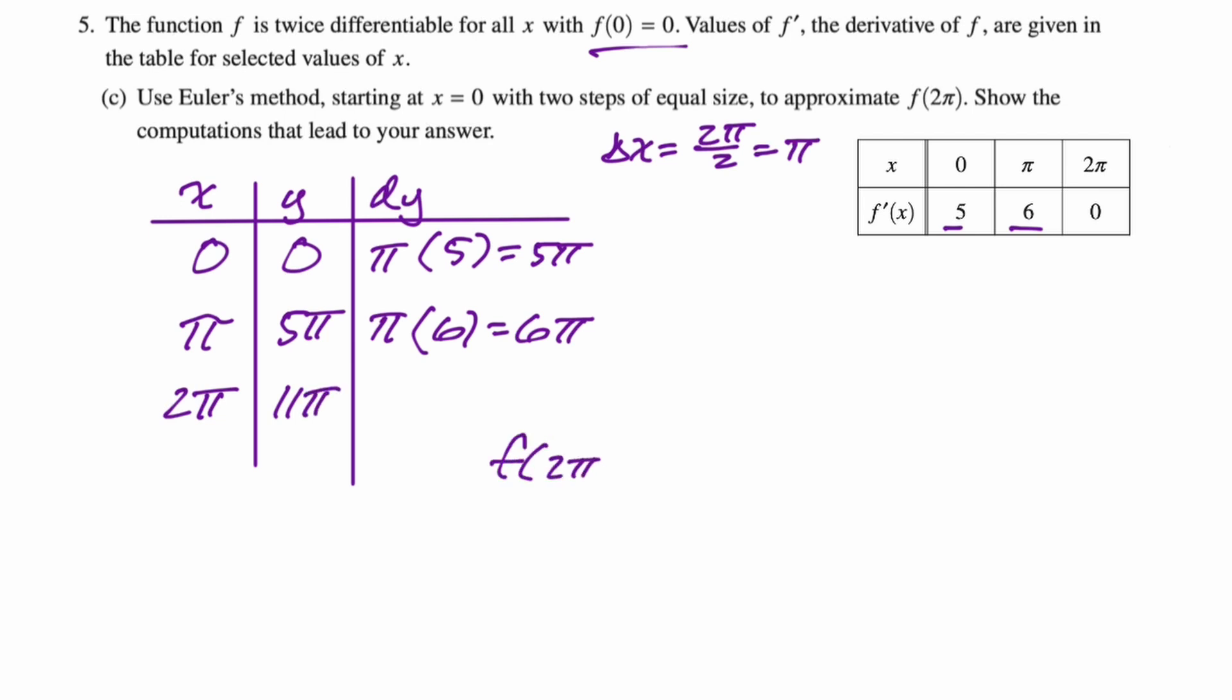We'll just write our answer. f(2π), we're going to say it's approximately, because it's an approximation. So it's approximately 11π. Let's take a look at the next one.